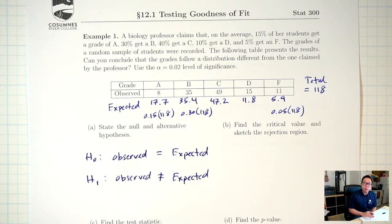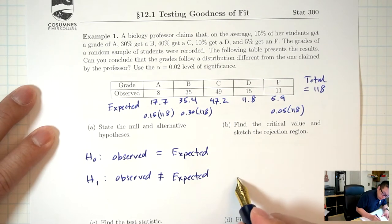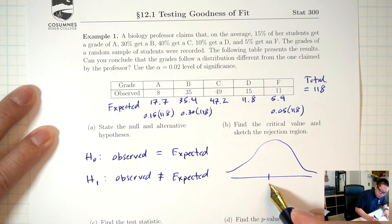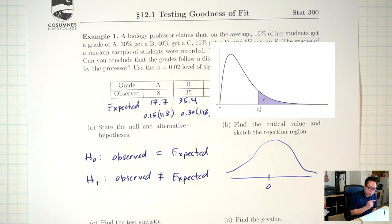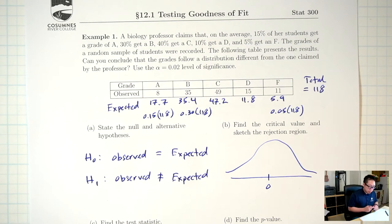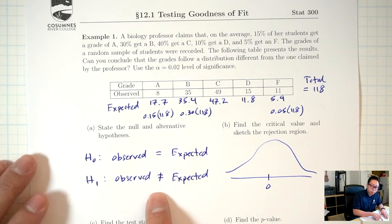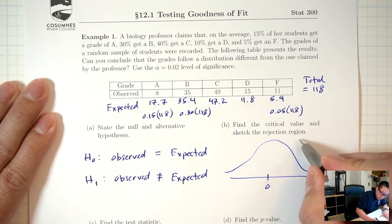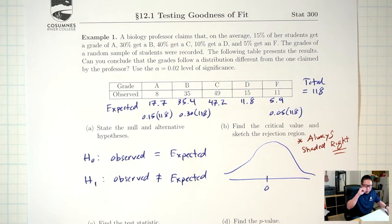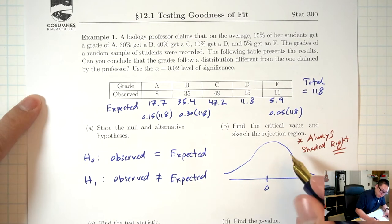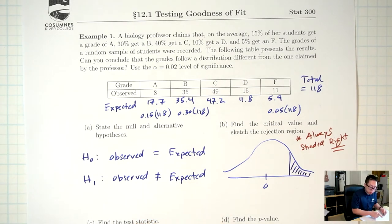Part B: find the critical value and sketch the rejection region. I'm drawing the same picture as for the other hypothesis tests. One difference for a goodness-of-fit test: even though it says not-equals, it's always going to be shaded to the right.